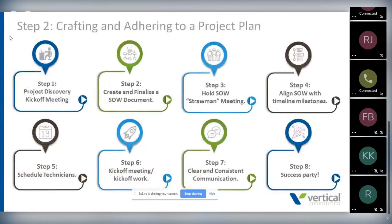Creating and abiding by a project plan is the key to professional project management. We perform this by creating a kickoff meeting, writing and getting sign-off on a scope of work document, and having a straw man meeting where we walk through and understand all components. We align the scope of work with timeline milestones, schedule technicians in advance with the right tools, and maintain clear and constant communication with everyone on the project — from the project manager to the solutions engineer, the customer's liaison, and the technician. Clear and consistent communication is the key to success.